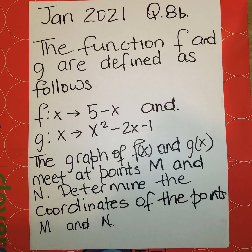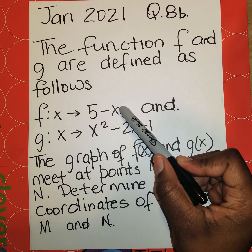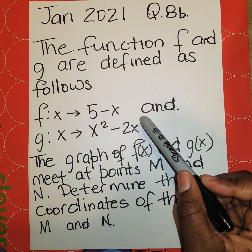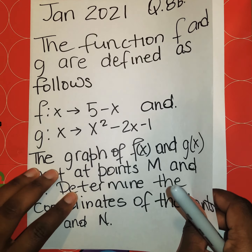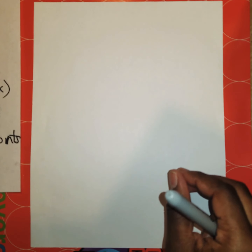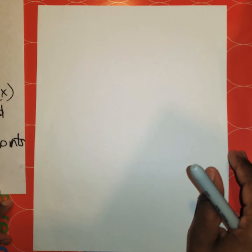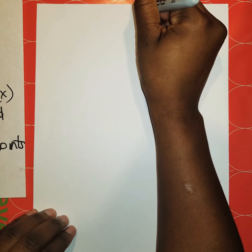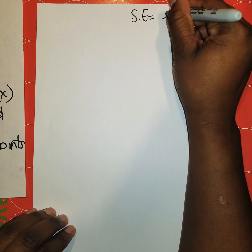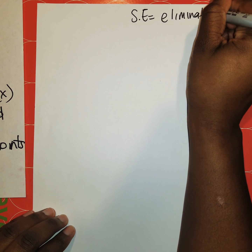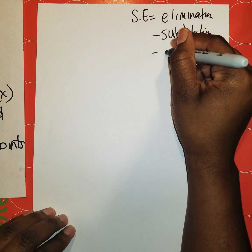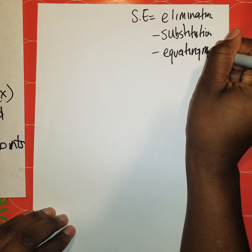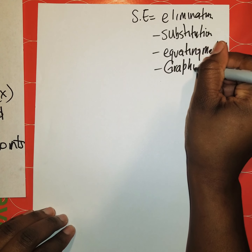You have to determine the coordinates of points M and N. You can see you have a linear function, which is 5 minus x, and a quadratic — so this is basically a linear and nonlinear question. You can solve it using systems of equations or simultaneous equations. For simultaneous equations, you have several methods: the elimination method, the substitution method, the equating method, and the graphical method.